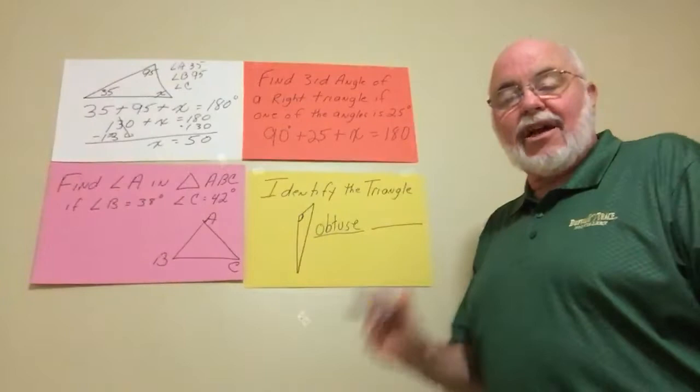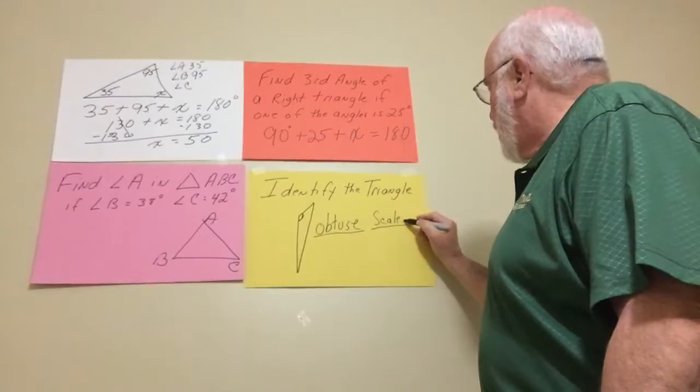Then we look at the sides. Since there's no tick marks on this, that's telling us that none of the sides are the same. So that would be a scalene.